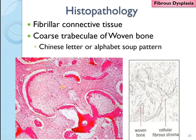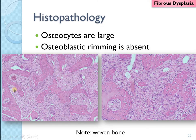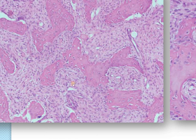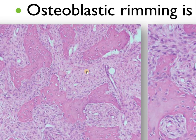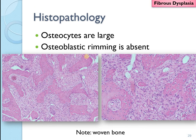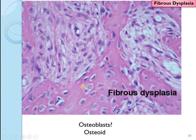Histopathologically, there is a fibrous connective tissue with curvilinear coarse trabeculae of woven bone. Because of this abnormal curvilinear pattern, some people call it the Chinese letter or alphabet soup pattern. The osteocytes are lacking at the edge of the bone — the border of the bone does not show any typical lining. Osteoblastic rimming is absent, and the connective tissue is very cellular. The osteocytes are very close to each other — that is why this is a woven bone.